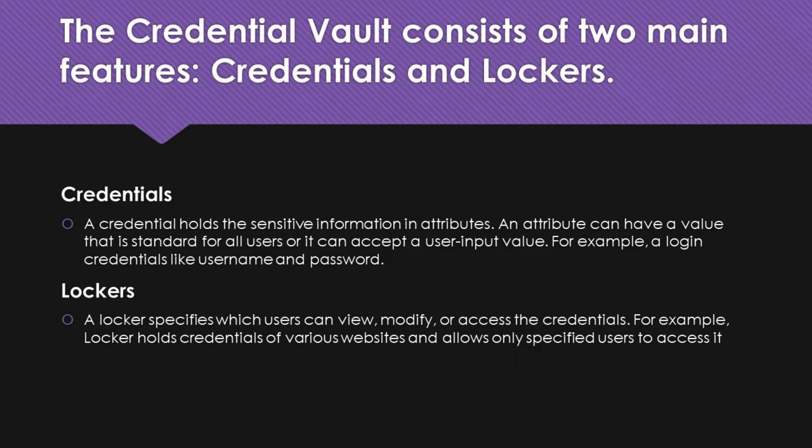The Credential Vault consists of two main features: credentials and lockers. A credential holds sensitive information in attributes. An attribute can have a value that is standard for all users, or it can accept a user input value — for example, login credentials like username and password. A locker specifies which users can view, modify, or access the credentials.